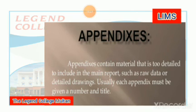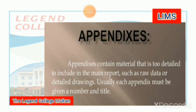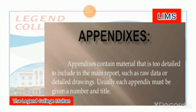Appendix contains material that is too detailed to include in the main report. Appendix jo hai wo bahut important part hota hai — that is too detailed — isko aapne include karna hota hai apni main report mein, such as raw data or detailed drawings. Appendix mein aap raw data bhi daal sakte hain aur detailed drawing data bhi daal sakte hain — that is quite up to you. Usually each appendix must be given a number and title — har appendix ka apna ek title hona chahiye.